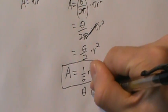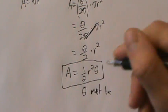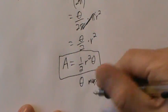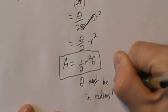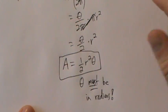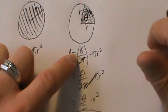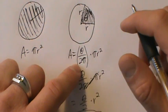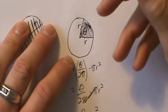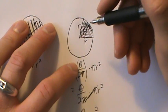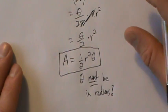Theta must be in radians — just like with the formula for arc length, theta has to be in radians before you can use this formula. That's because when we set up the proportion theta divided by 2 pi, it's 2 pi radians in a full circle. So watch out for that.